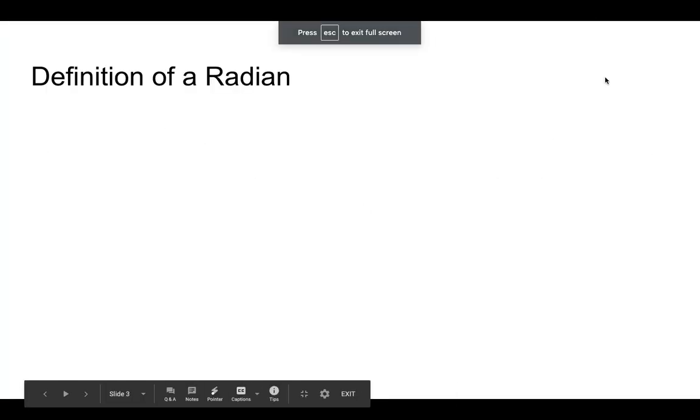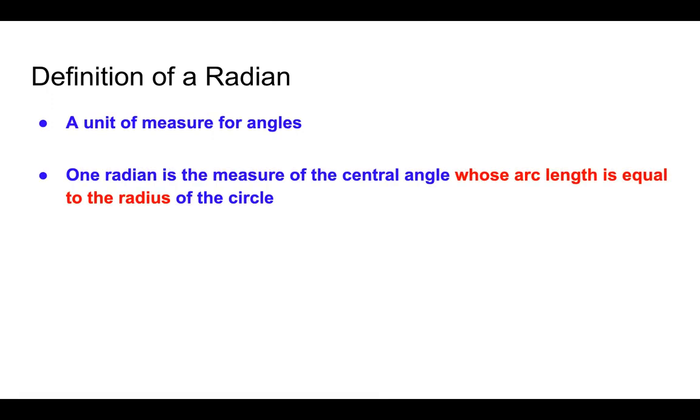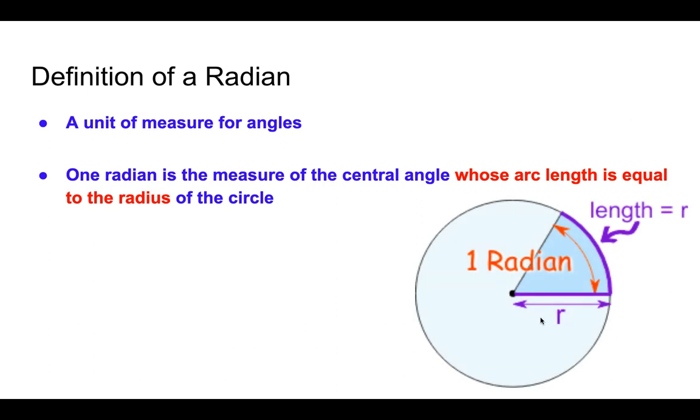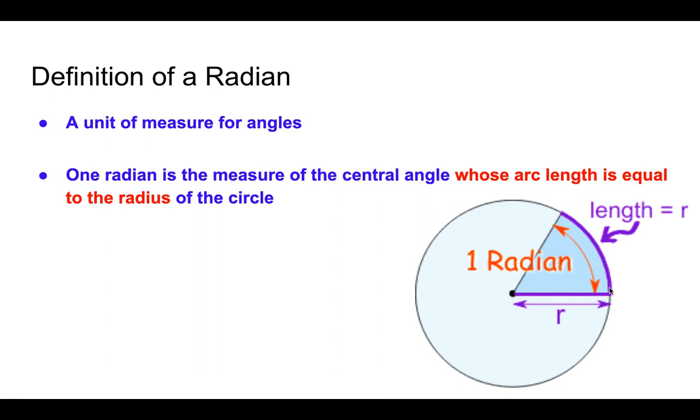Coming back to our presentation, we're going to define a radian. A radian is a unit of measure for angles. And one radian is the measure of the central angle whose arc length is equal to the radius of the circle. Here's a picture. We have the radius, some measure, and we have the length of the arc that is the same radius. And this is the central angle and that represents one radian.